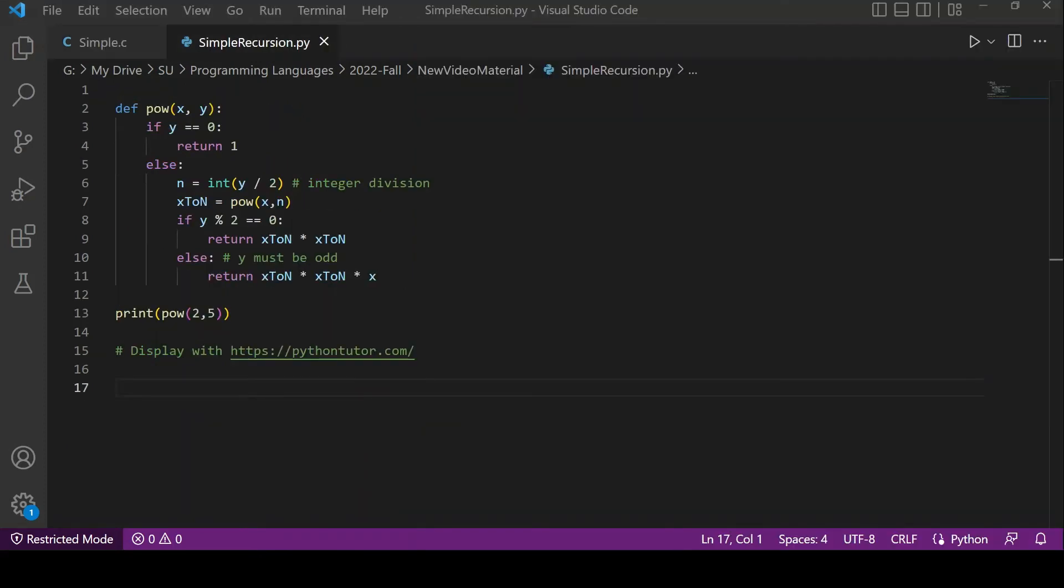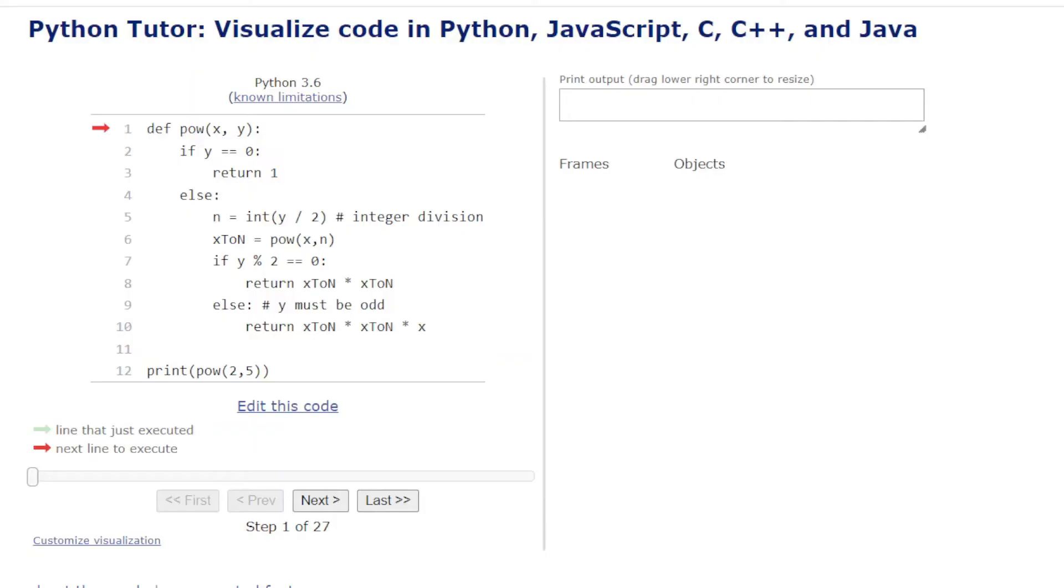Next, I'm going to show you an example that does use recursion, but I'm going to switch languages. This is some Python code. It's a simple recursive function that computes x raised to the power of y for integers. Now, I'm going to demonstrate how this works using a website, pythontutor.com. Here we see our code on the left, and we're going to step through the execution one bit at a time.